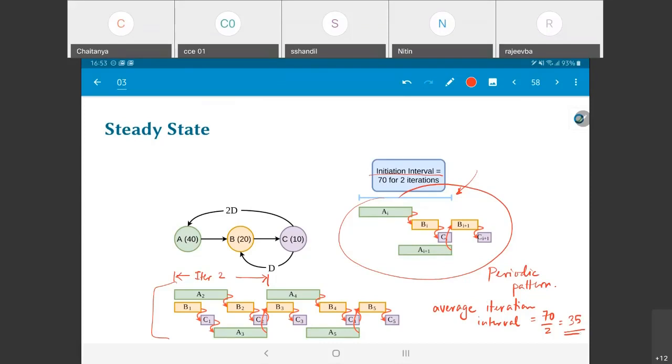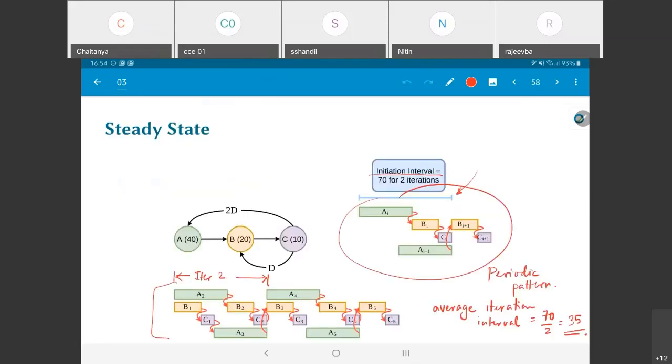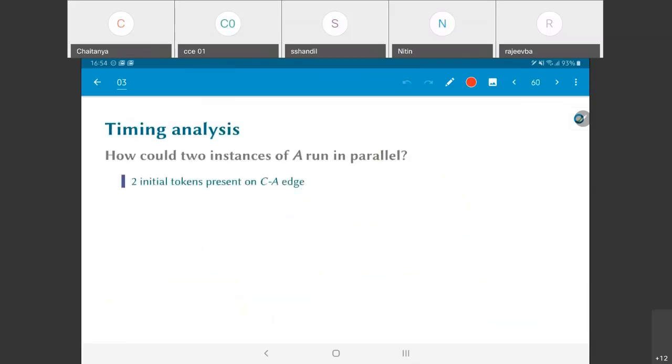So the first question, of course, is how can two instances of A run in parallel? Because there are two initial tokens present on the CE2AH. So A2 happens to depend on C0, which is what we have seen in this graph. But A0 and A1 do not depend on C0. So A0 and A1 can both execute.